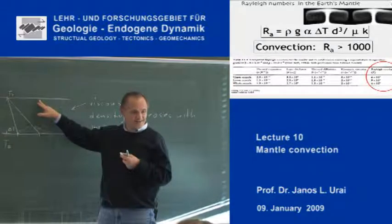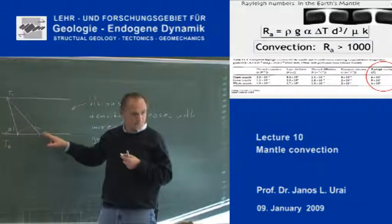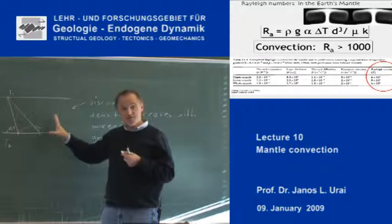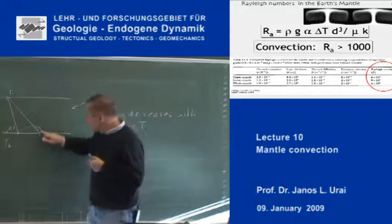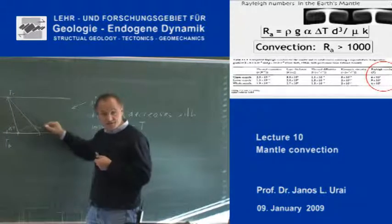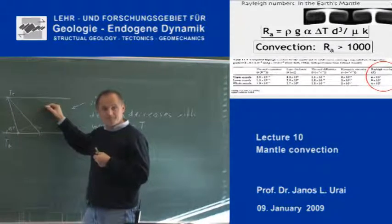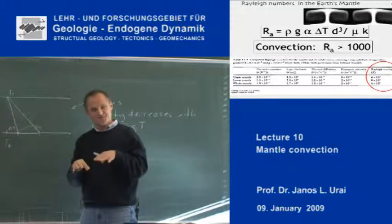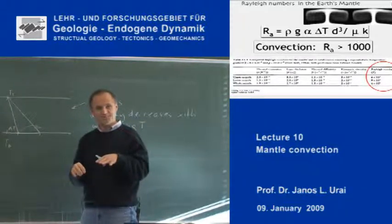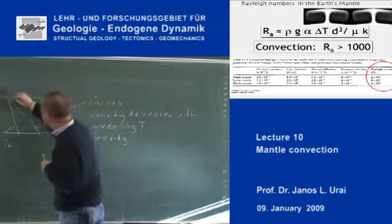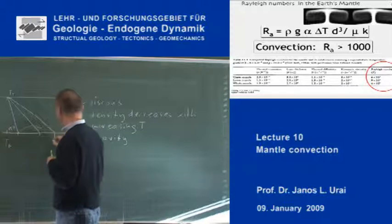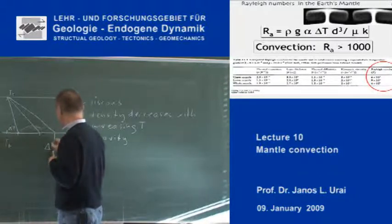There is a difference in density between the top and the bottom, but maybe we are still in the case that if a small element here wants to go up, it cannot make it to the top because it is cooled down by the surroundings. The system is still stable. And then there is one critical temperature gradient, delta T critical.